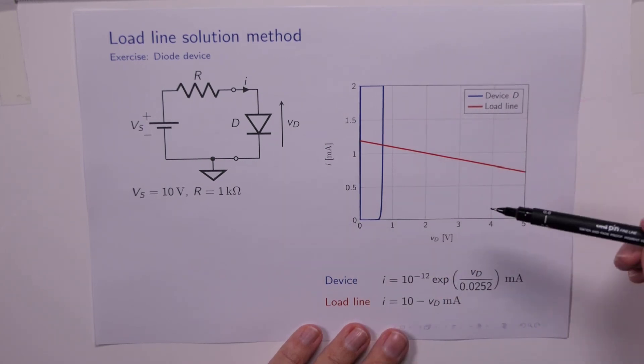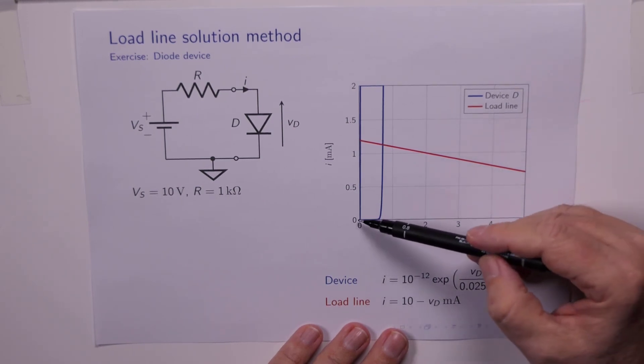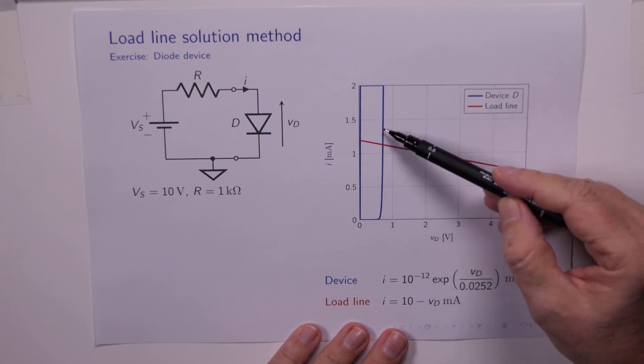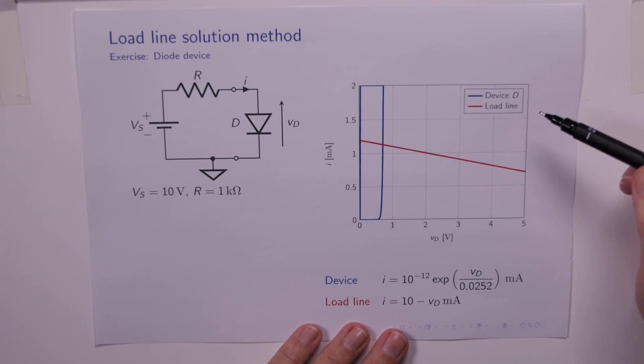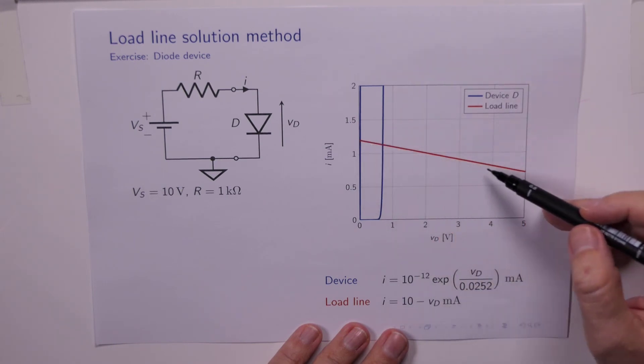And the diode equation for this particular diode is given by this expression here. So we've got the reverse saturation current, the thermal voltage, that's our equation. And this blue line here is the characteristic curve for the diode. When we put in our load line equation, it doesn't quite fit on this graph, but that's it there.